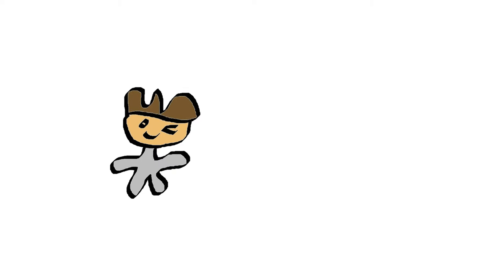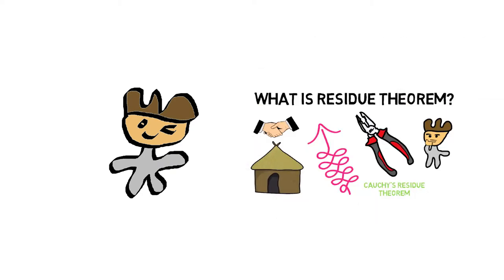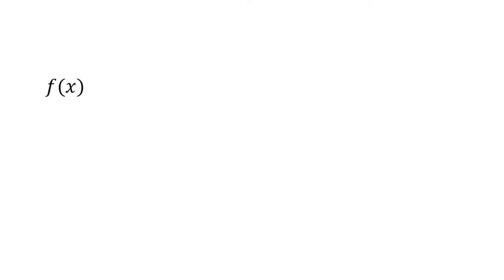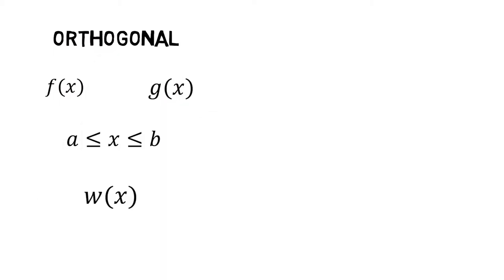Before we jump in, check out the previous part of this series to learn about what residue theorem is. Now, two functions f and g are orthogonal over the closed interval [a, b] with weighting function w if the inner product of f and g, which is equivalent to the integral of f(x)g(x)w(x)dx from a to b, is equal to zero.